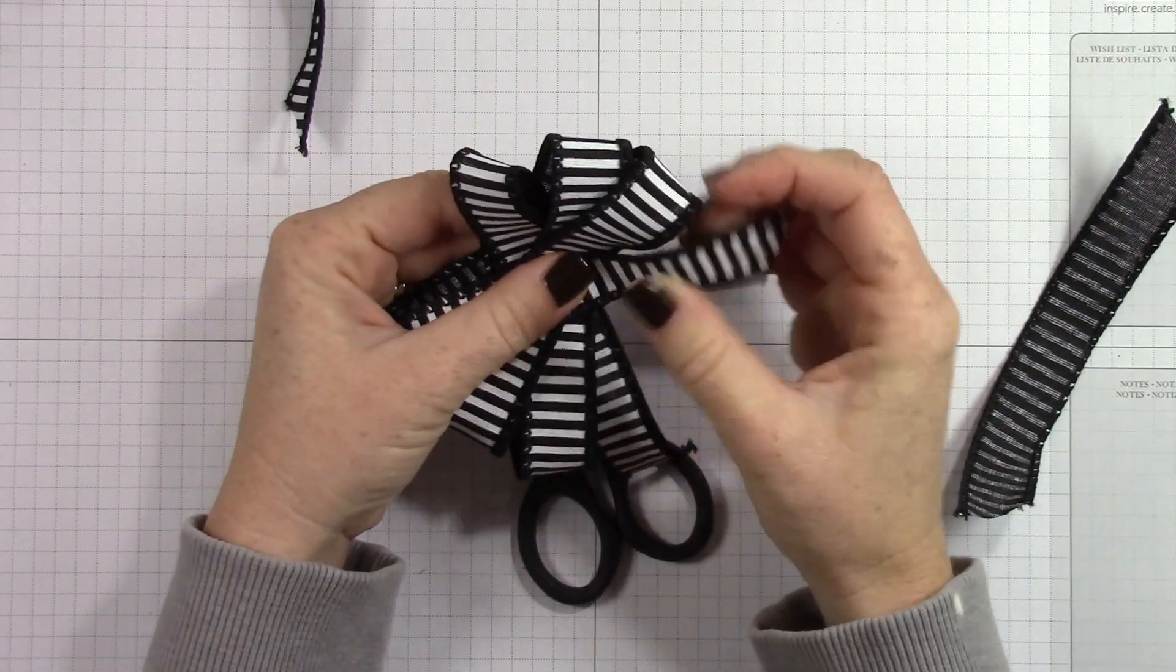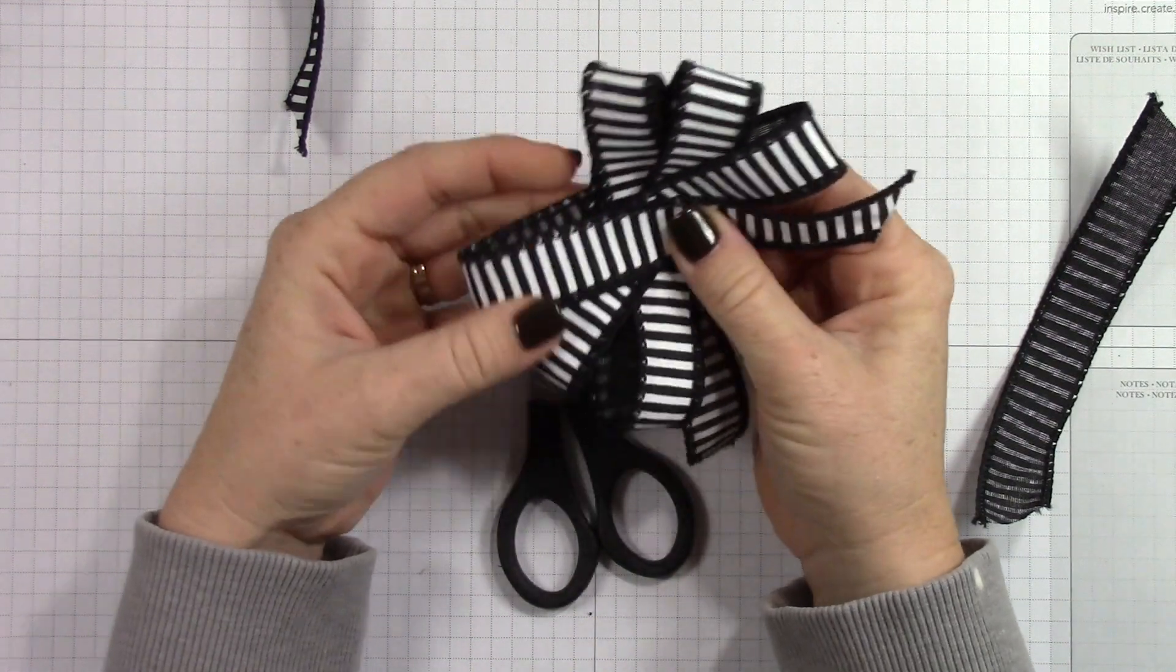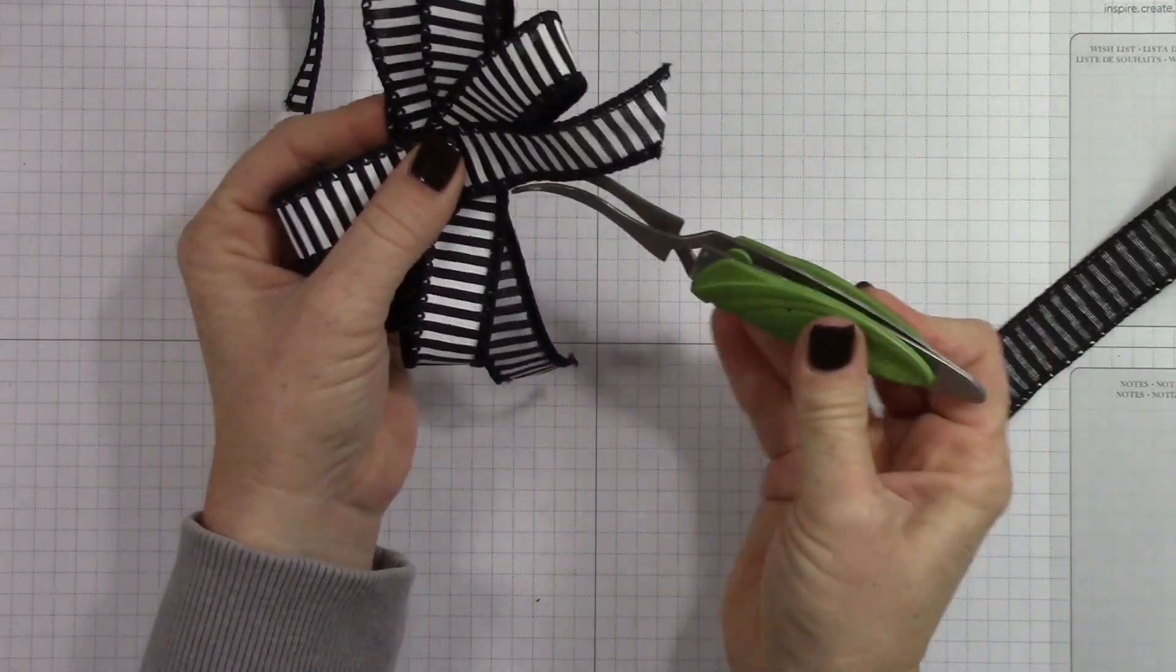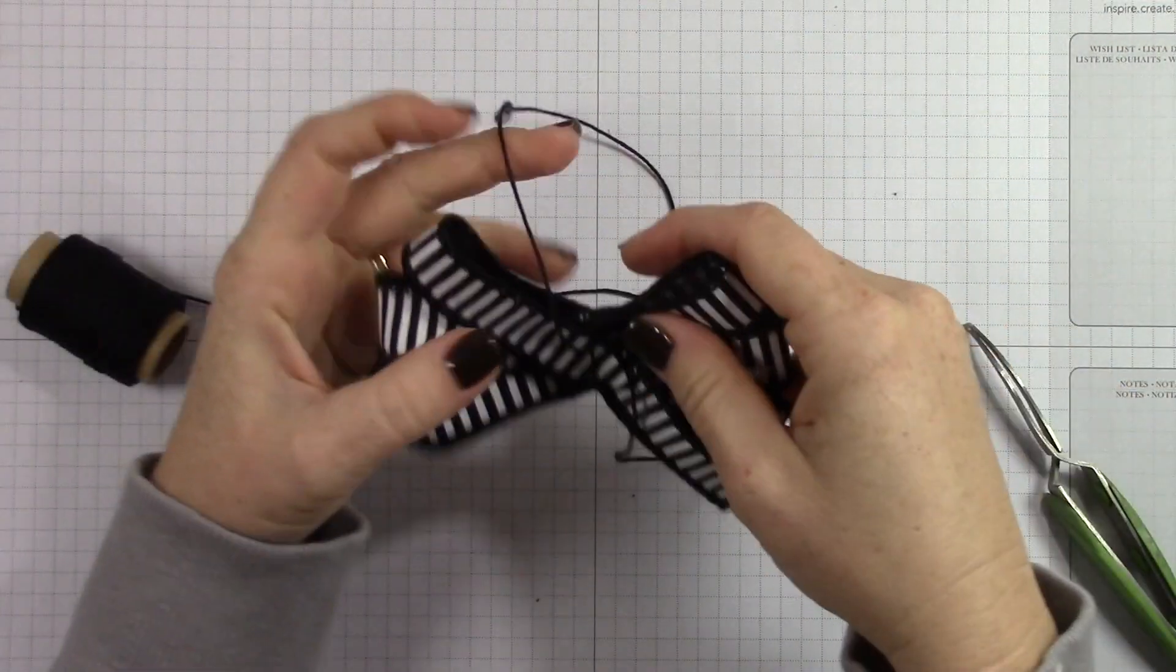She will fuss with a bow or ribbon until, I've seen her literally mess with ribbon or a bow on a dress, on a package, for a good 20 minutes straight. She has to get it perfect.